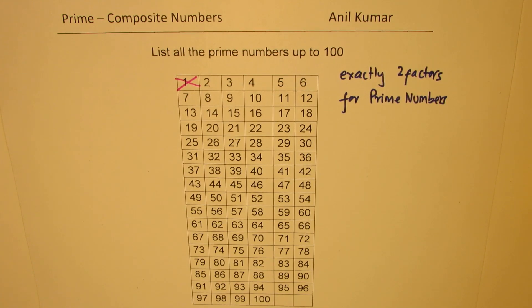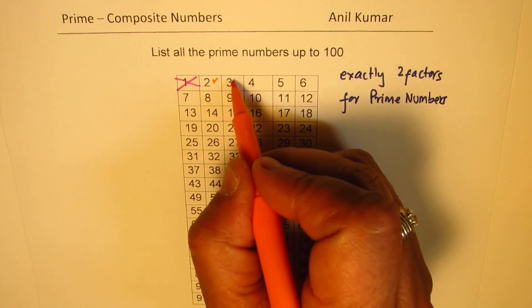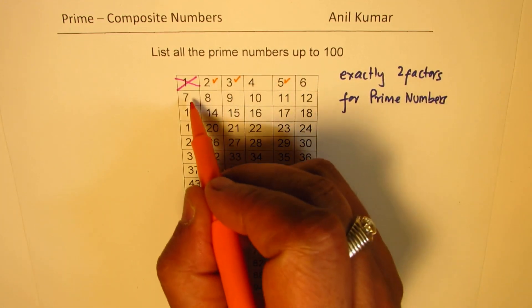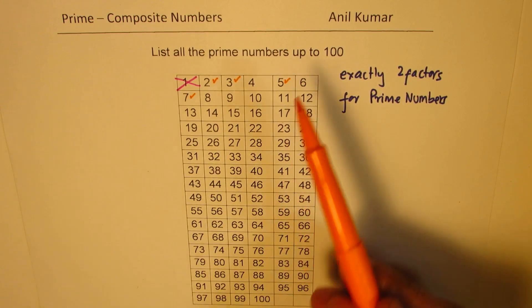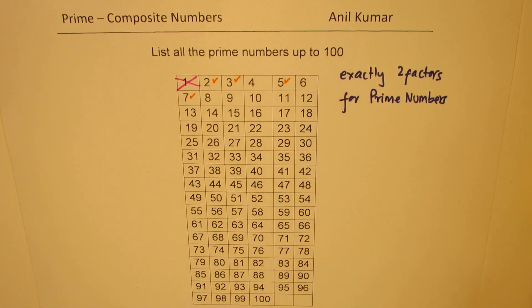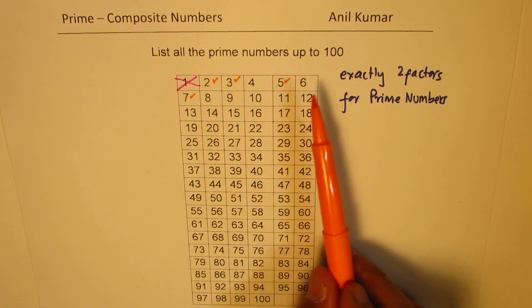Now the prime numbers which you know very clearly are 2 is a prime number, 3 is a prime number, 5 is a prime number, 7 is a prime number. Since we are only interested in numbers up to 100, we need not go further.